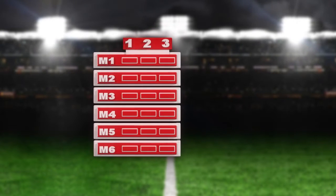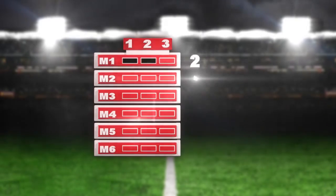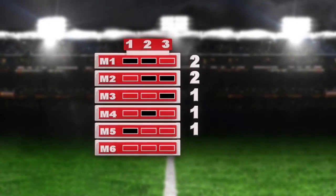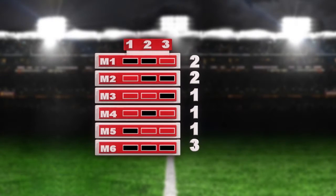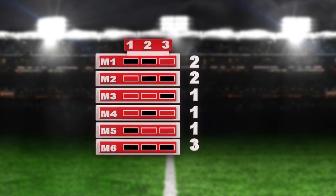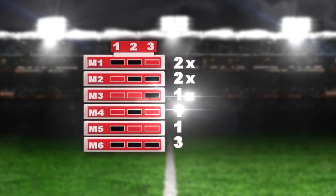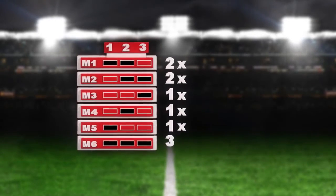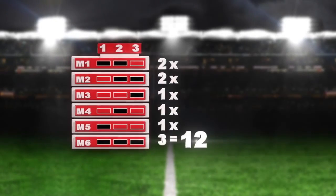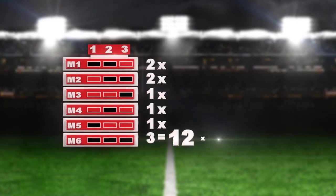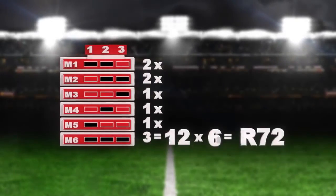Let's take a Soccer 6 bet as an example. Here, 2 results have been selected in M1 and M2, 1 in M3, M4 and M5, and 3 in M6. To get the cost, take the total number of choices made in each match and multiply them out. That's 2 times 2 times 1 times 1 times 1 times 3, which equals 12. So there are 12 combinations at 6 Rand each — that's 12 times 6 — so the bet costs 72 Rand.